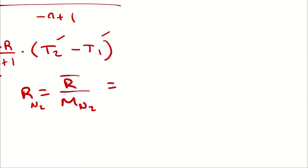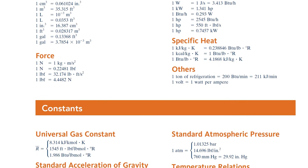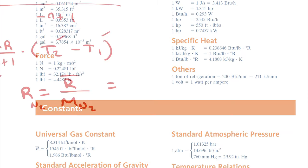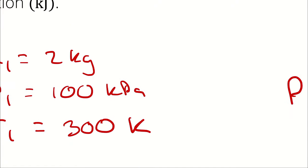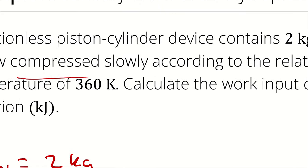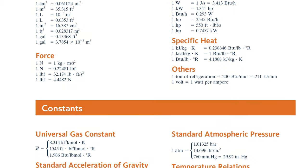The universal gas constant comes from the inside cover of our textbook, specifically the bottom left-hand corner. We could use whichever form we want. I have a metric unit problem here, and I'm looking for kilojoules. So I would probably be easiest off if I plugged in 8.314 kilojoules per kilomole Kelvin and then looked up the molar mass of nitrogen in kilograms per kilomole.